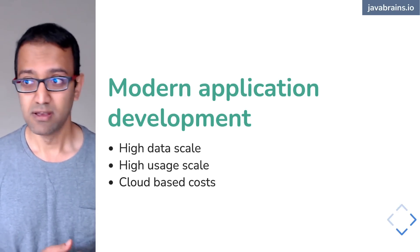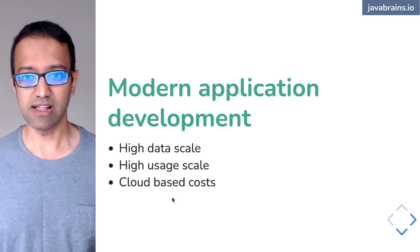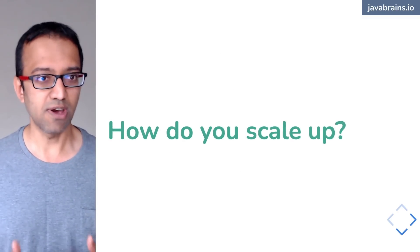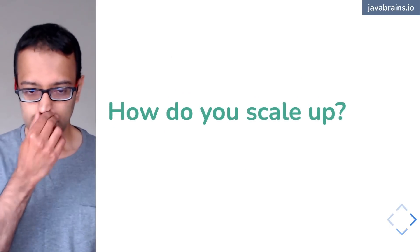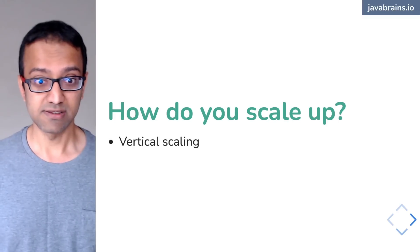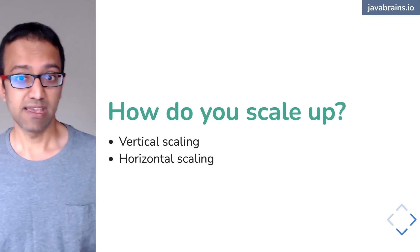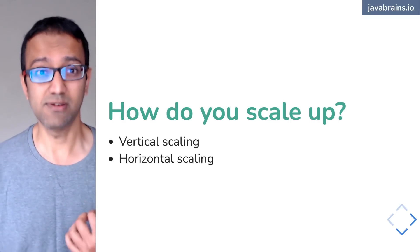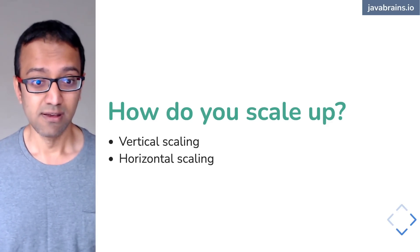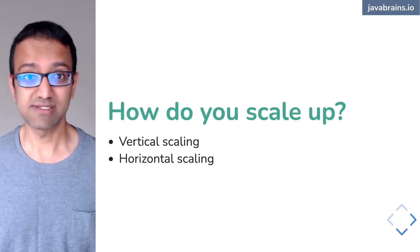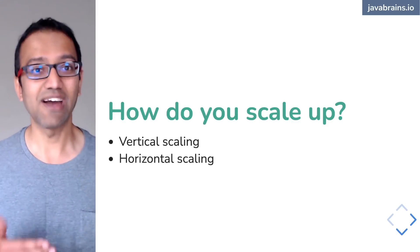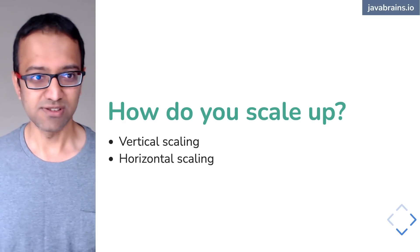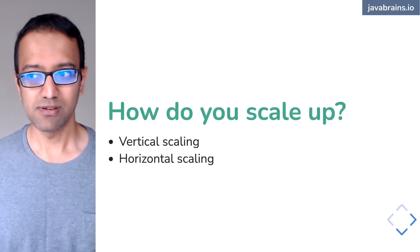When you have high data scale and high usage scale, how do you scale up? There are two different ways: vertical scaling — increasing the power of your computers, adding more RAM or processor capacity — and horizontal scaling, which is where the industry is going. Vertical scaling has a ceiling; after a certain point you have to scale horizontally by adding more servers. But before any scaling, you first need to optimize your code.